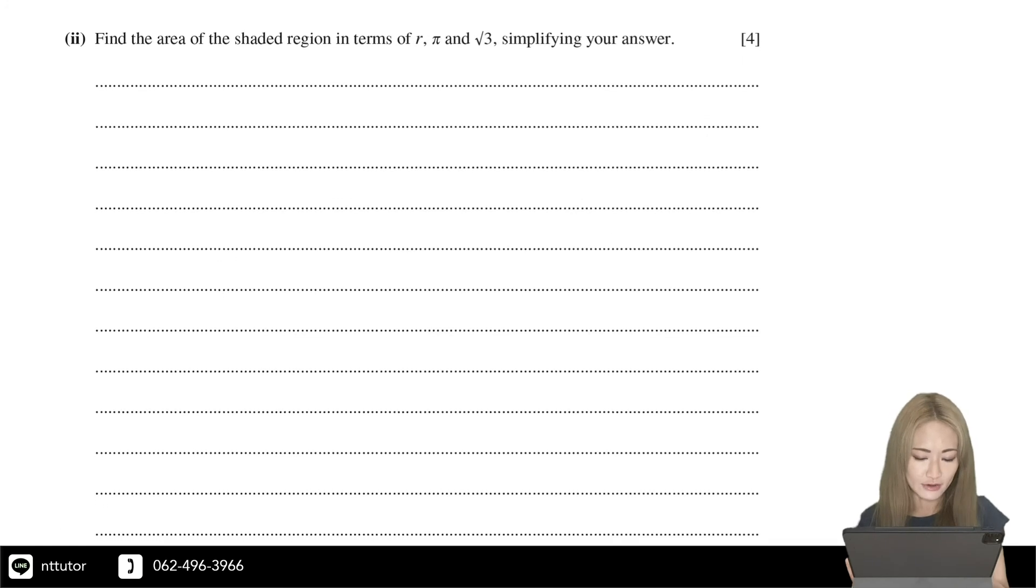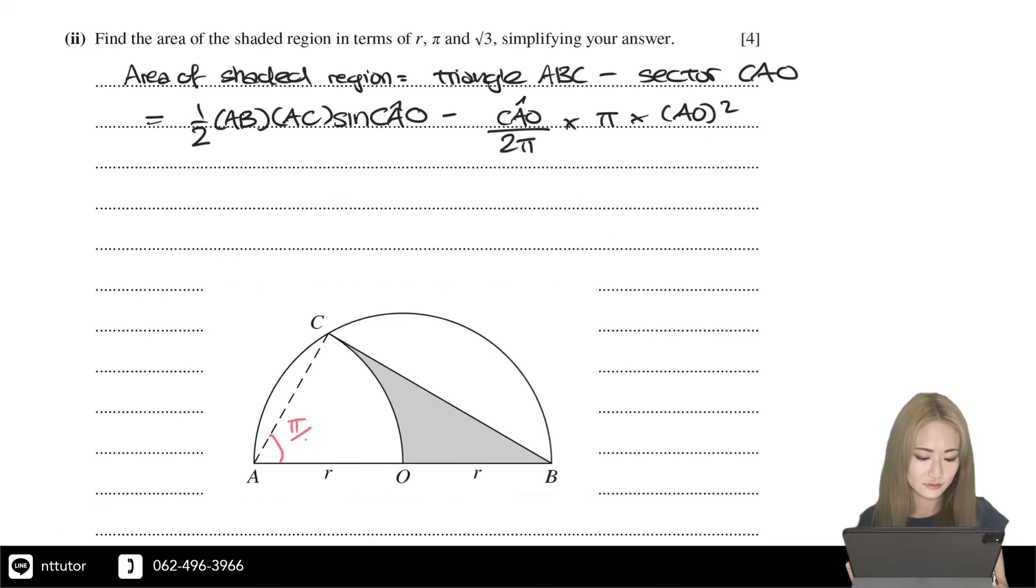we have angle CAO, and we also have AO. So the area is equal to that. We know that AB is equal to 2R, AC is equal to R,